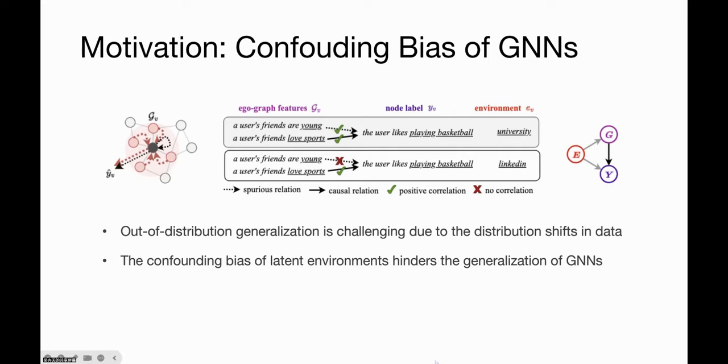For example, in social networks, assume the model aims to predict if the user likes playing basketball. In such a case, the user's friends love sports would be causally correlated with the user's likes playing basketball, while the user's being young would be spuriously correlated with the user's likes playing basketball.